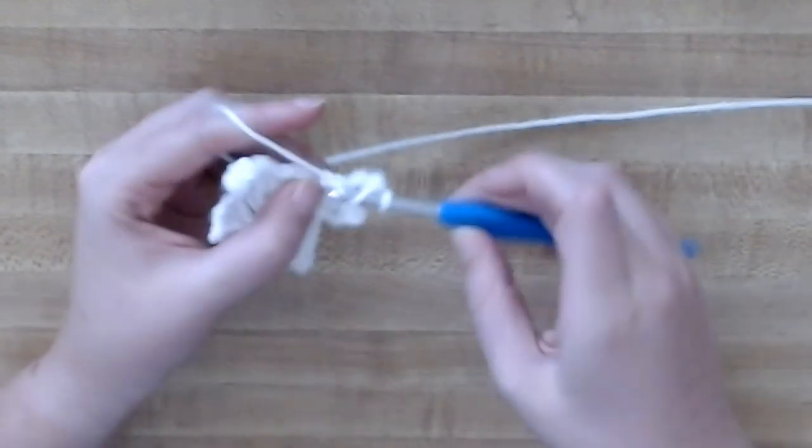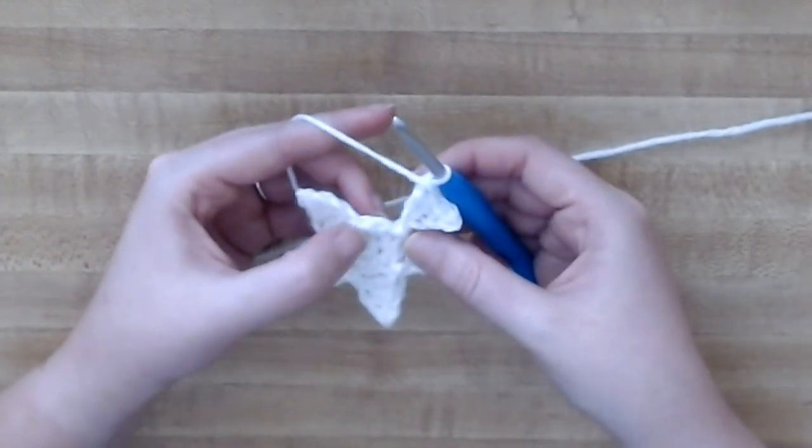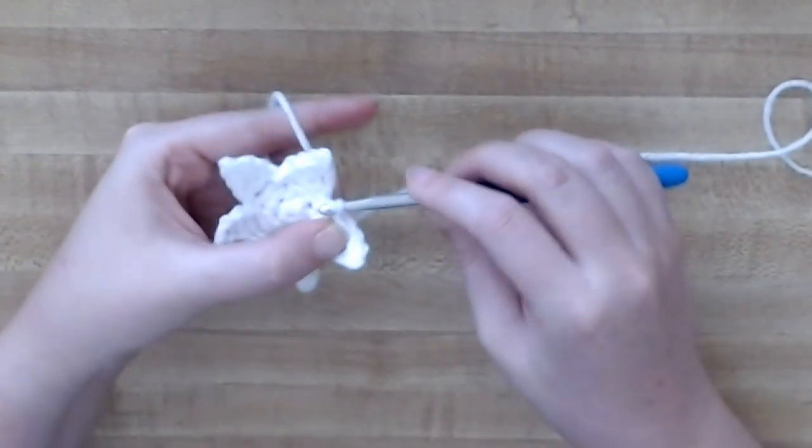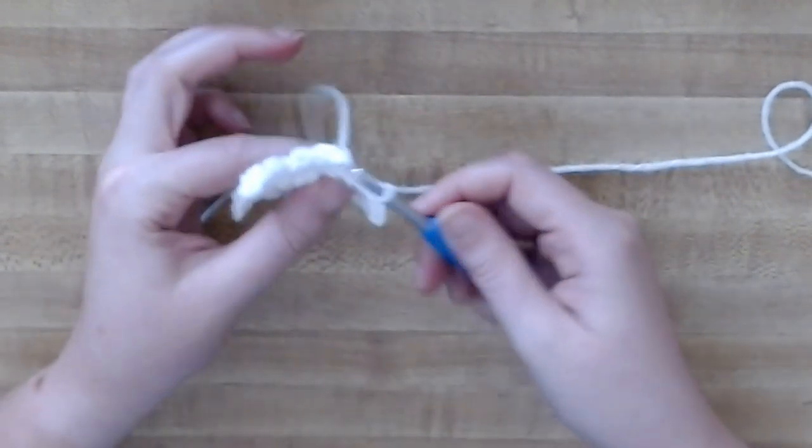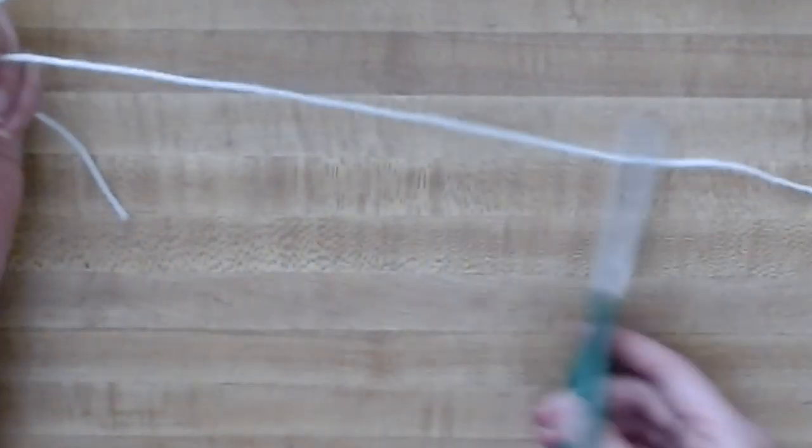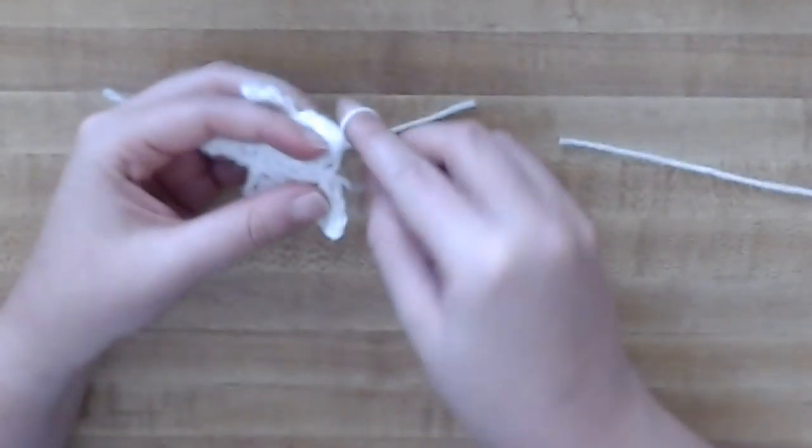And then when you get to the end, slip stitch in the last stitch there and pull up your yarn. You're going to want to leave a long tail if you plan on sewing it onto something, and just finish off your yarn by pulling it through your loop and then pulling it tightly. And then you can weave in the little tail and use the long one to sew onto any item.